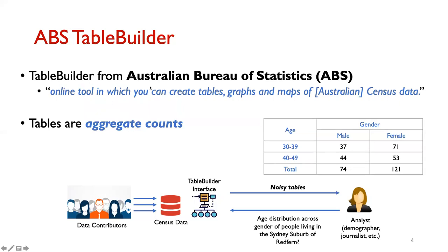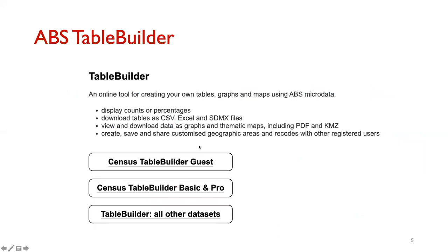Table Builder is a tool from the Australian Bureau of Statistics to query census data. The ABS is in charge of managing Australian census data and this tool lets users create tables, graphs, and maps. The tables are aggregated counts and the counts are noisy. Table Builder comes in three flavors: guest, basic, and pro. Guest and basic are free, basic requires registration, and pro is a paid service. Our attacks work on all three.